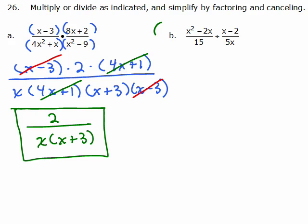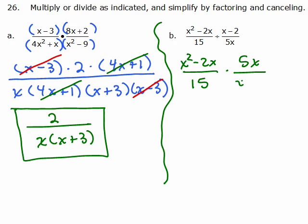Now the first thing you do over on this side is multiply by the reciprocal. So I have x squared minus 2x over 15 times 5x over x minus 2. And now we proceed by factoring just like we did on the left side. So these are factors, right? Now if you want you can cancel that 5 and 15 right now or we could do it later.